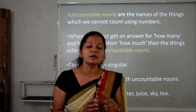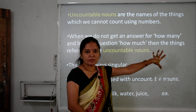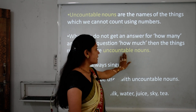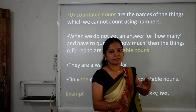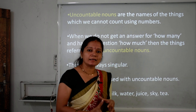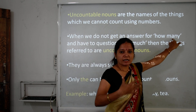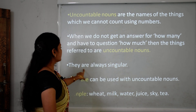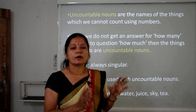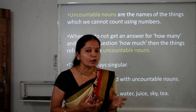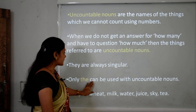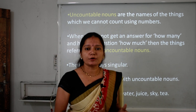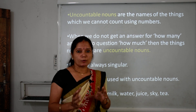How do we identify uncountable nouns? When we do not get an answer to 'how many' but get an answer to 'how much,' then we know it is uncountable. So 'many' is used with countable nouns and 'much' is used with uncountable nouns. Uncountable nouns are always singular because we cannot count them. Only 'the' can be used with uncountable nouns — we cannot use 'a' or 'an' with them.